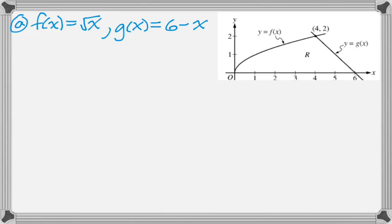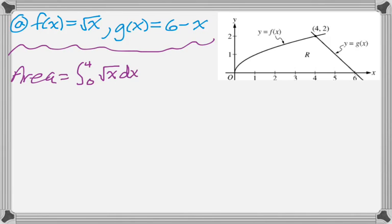And the first thing we need to do is find the area of region R. And region R is, I mean, there's two pieces to it. There's the first piece, which will be the integral of f of x from 0 to 4. Which is the top, take away, bottom. And then plus the integral from 4 to 6 of g of x, which is 6 minus x dx.